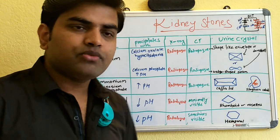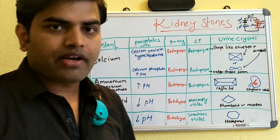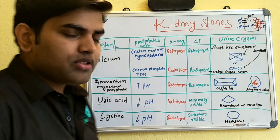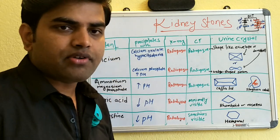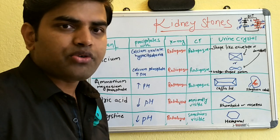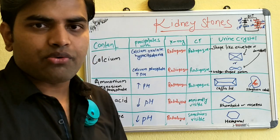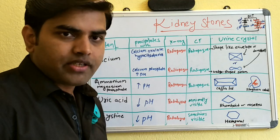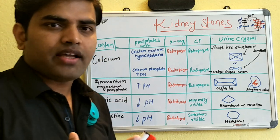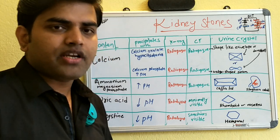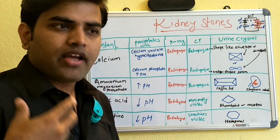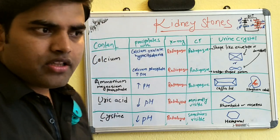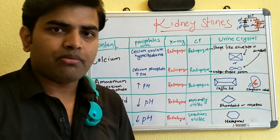Today we will be discussing renal stones or kidney stones. Stones can be present anywhere in the renal system, from the minor calyx to the pelvis, ureter, and up to the tip of the urethra. They lead to two major complications. If there is a stone on the right side, there will be colicky abdominal pain radiating toward the groin, and there will be hematuria — these are the symptoms the patient will present with.